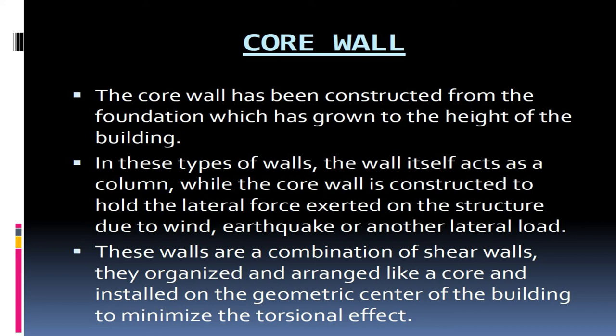Core wall. The core wall has been constructed from the foundation, which has grown to the height of the building. In these types of walls, the wall itself acts as a column. The core wall is constructed to resist lateral forces exerted on the structure due to wind, earthquake, or other lateral loads. These walls are a combination of shear walls, organized and arranged like a core, and installed on the geometric center of the building to minimize the torsional effect.